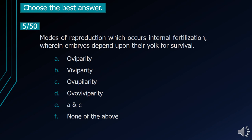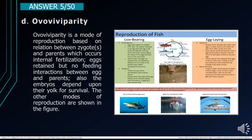Number 5. Modes of reproduction which occurs with internal fertilization wherein embryos depend upon their yolk for survival. A. Oviparity. B. Viviparity. C. Ovupolarity. D. Oviviviparity. E. A and C. F. None of the above. The correct answer is letter D, Oviviviparity. Oviviviparity is a mode of reproduction in which internal fertilization occurs. Eggs are retained but there are no feeding interactions between egg and parents. The embryos depend upon their yolk for survival. The other modes of reproduction are shown in the figure.